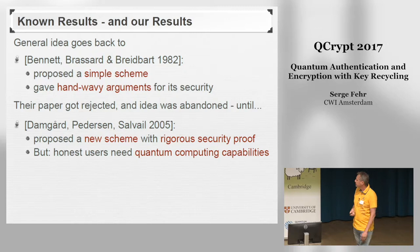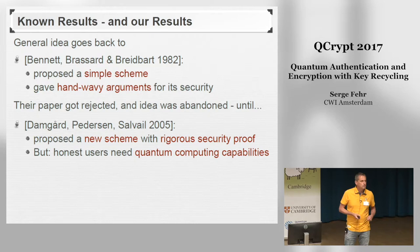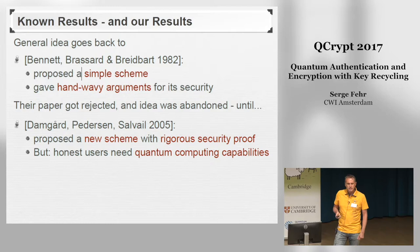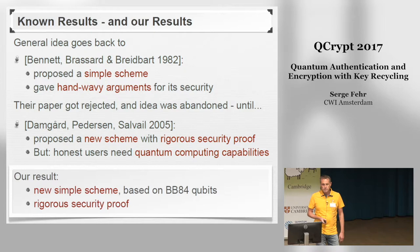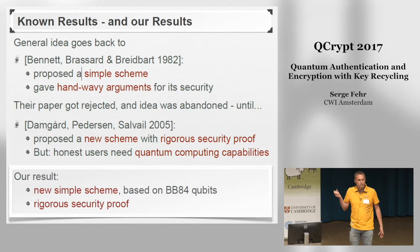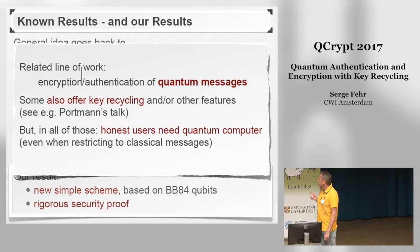Then in 2005, Damgaard, Pettersson, and Zalweil picked up on this idea again and proposed a new scheme for encryption with key recycling, now together with a rigorous security proof. However, in their scheme they use a more sophisticated quantum encoding scheme, which means the honest users need to have quantum computing capabilities. Our result is a new simple scheme, very much in the spirit of the original scheme by Bennett et al., that only uses BB84 qubits and so doesn't require any quantum computing capabilities, and of course also comes with a rigorous security proof.